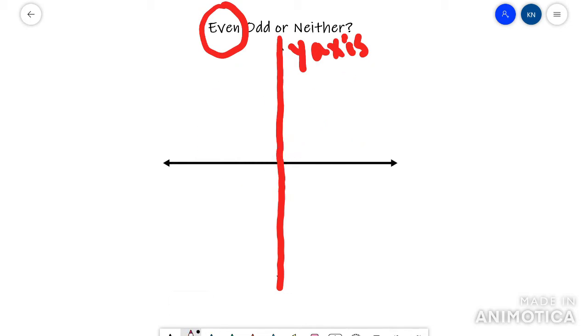Another example of an even function would be a quadratic. That would work because the right side matches the left side, like looking in a mirror almost.